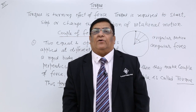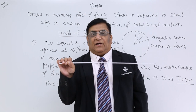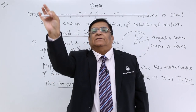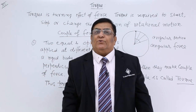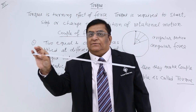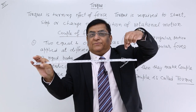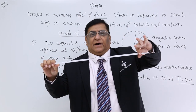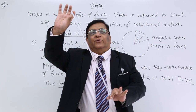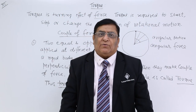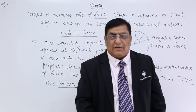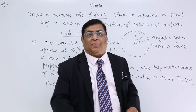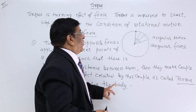A single force cannot rotate. If I have a single force here, the body will just move in a linear direction — a single force creates linear motion. But if there are two opposite forces, one portion is taken up and the other is taken down, and the effect is rotation. So for rotation, what we need is a couple of force. And this turning effect of a couple of force is known as torque.